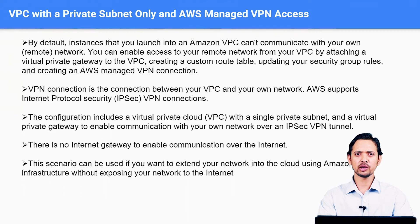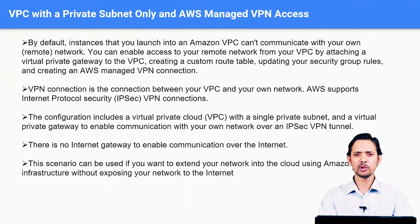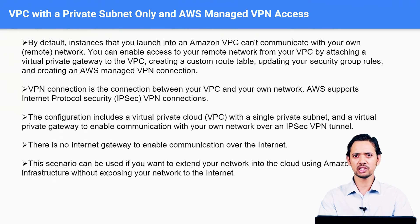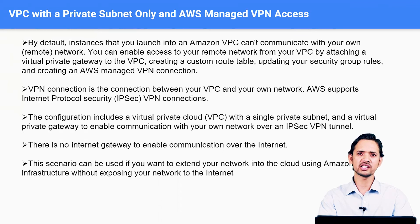By using VPN connections, it looks like you are just extending your on-premise data center to the cloud. The VPC becomes more integrated with your on-premise data center, and any communication between the VPN and the VPC would be more like private traffic. Because of the VPN tunnel and IPsec protecting it, you can use this cloud as an extended data center.